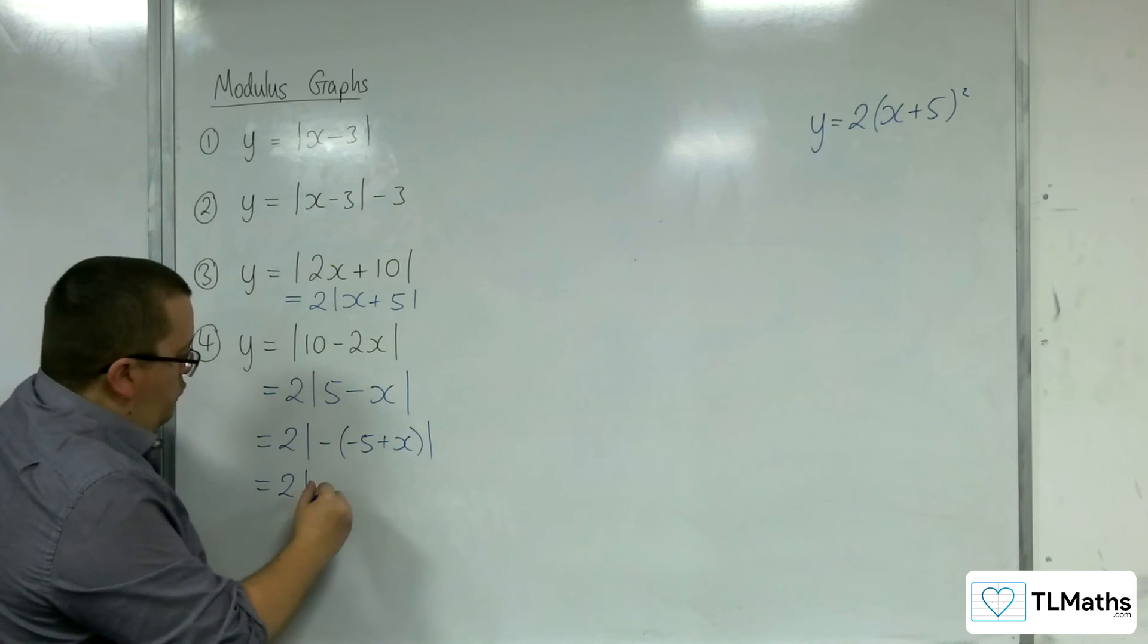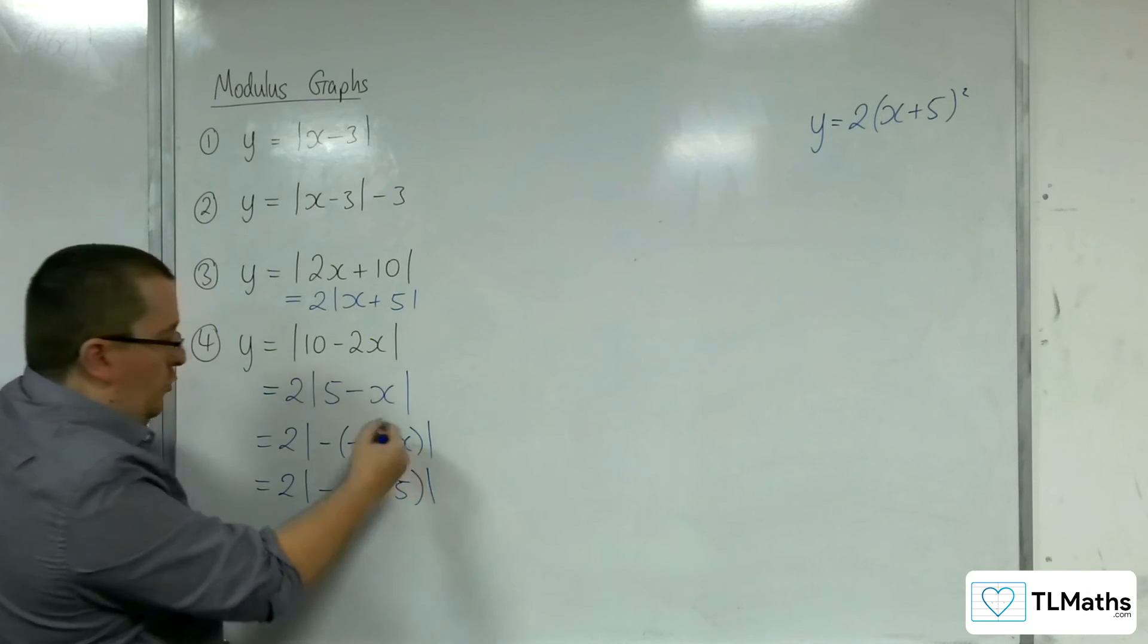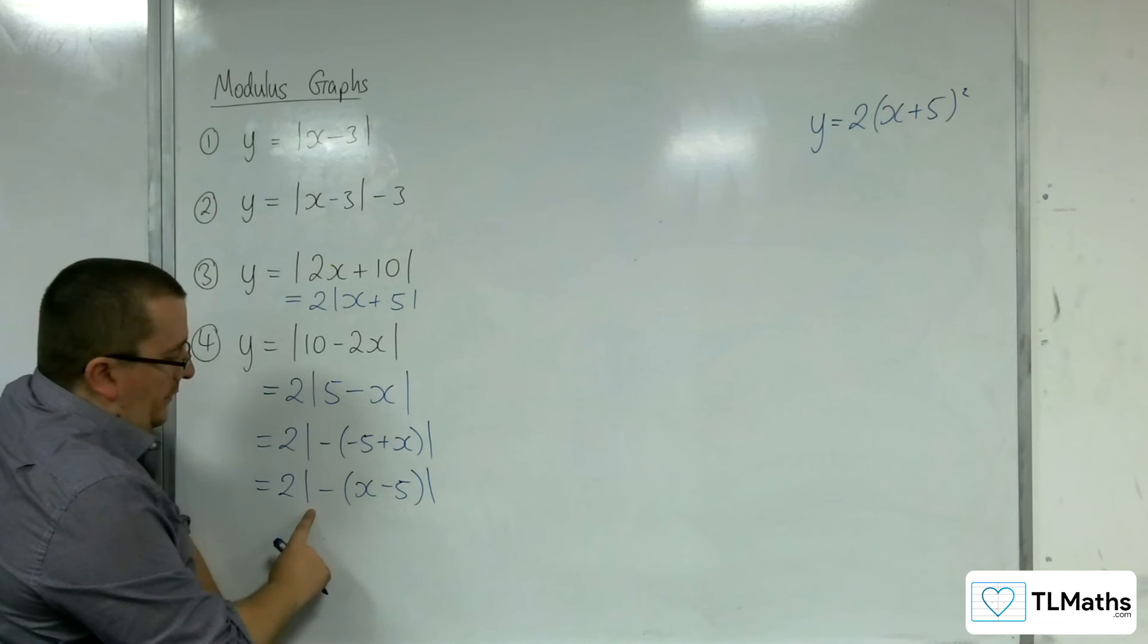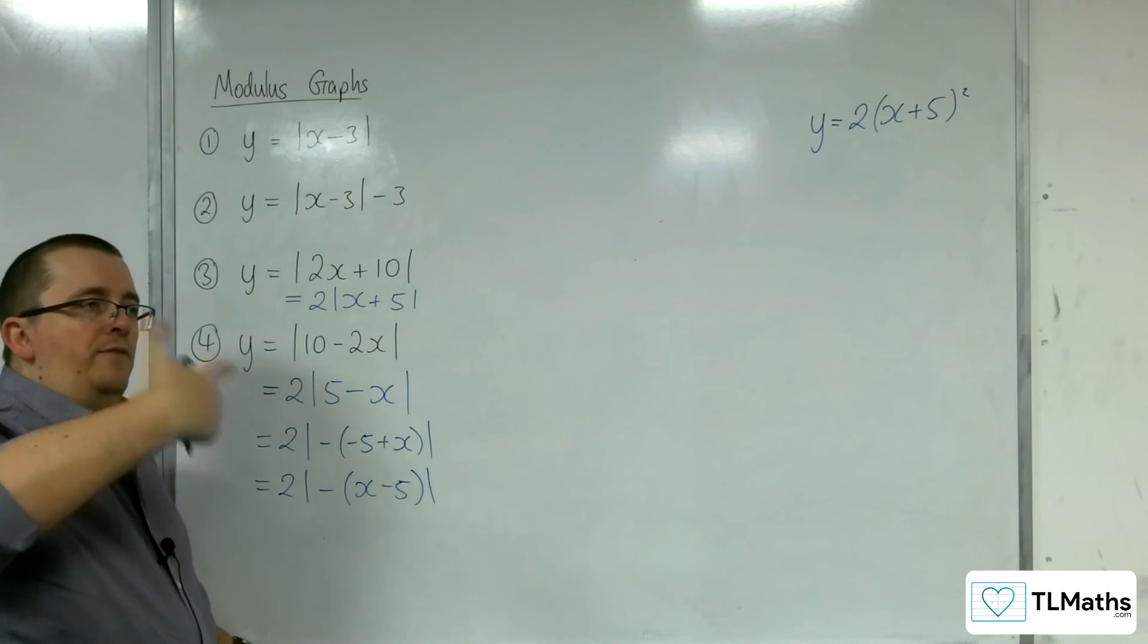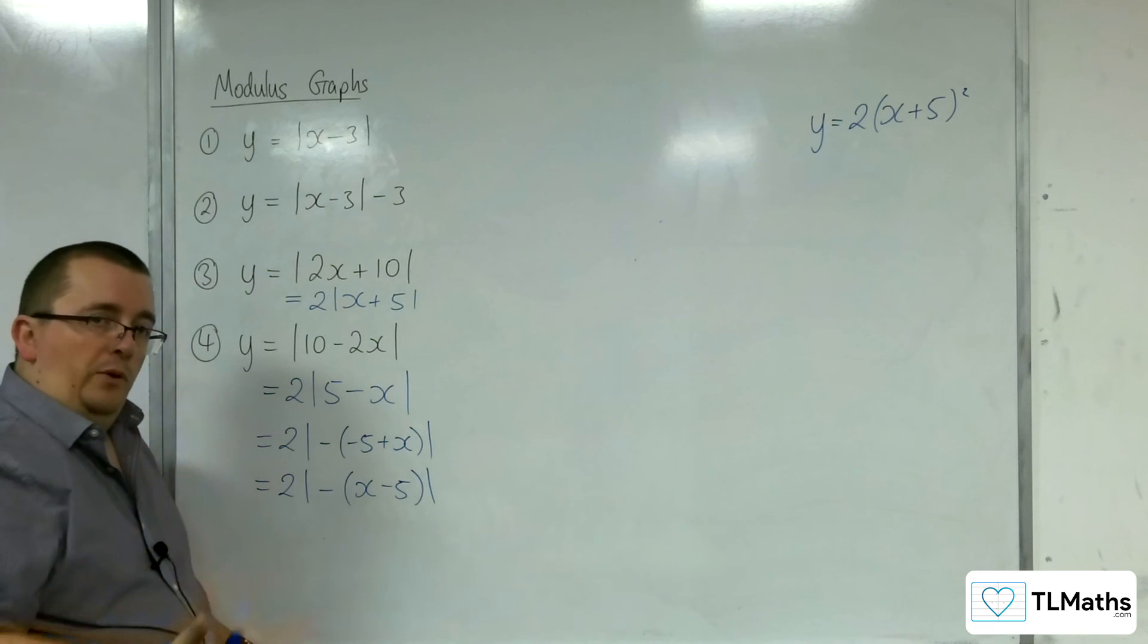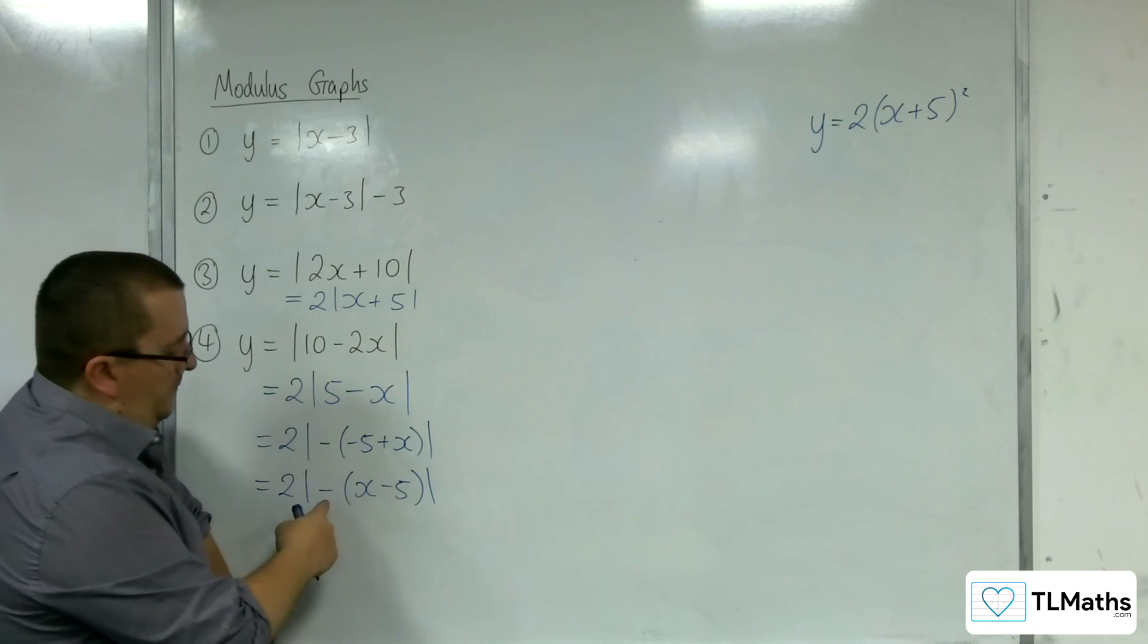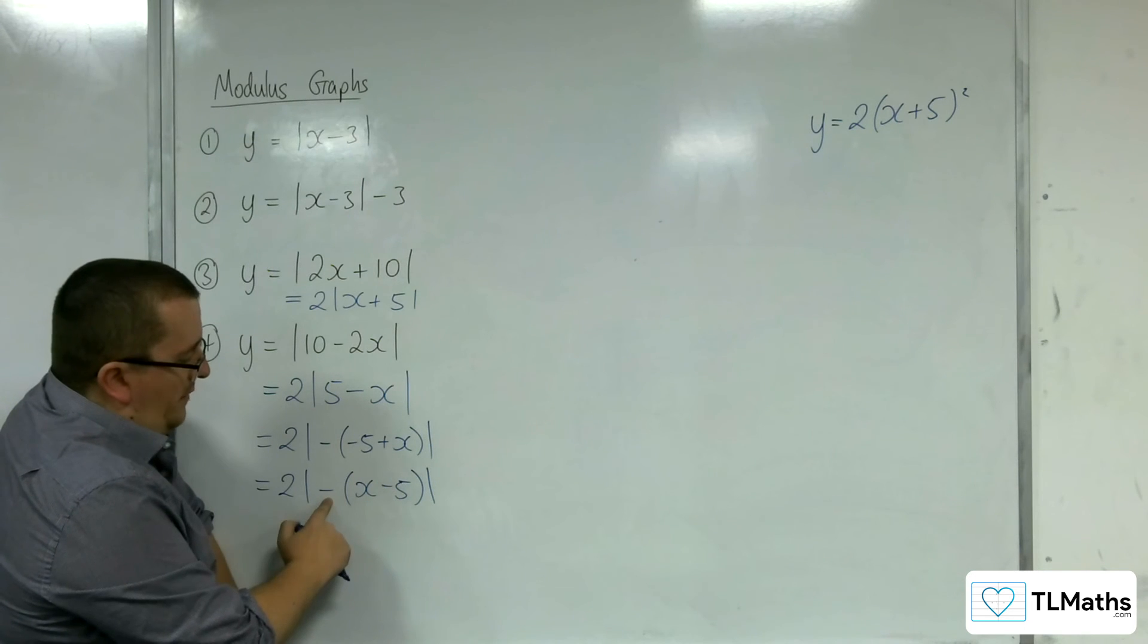Now, you could rewrite this as |x - 5|, just reordering those two terms. Now, because you're doing the modulus of what's inside here, and this is negative, the modulus makes every value or the outputs positive or greater than or equal to 0. So if you've got this x - 5, and then you're making whatever that value is the negative of that, then the modulus side will undo the negative.